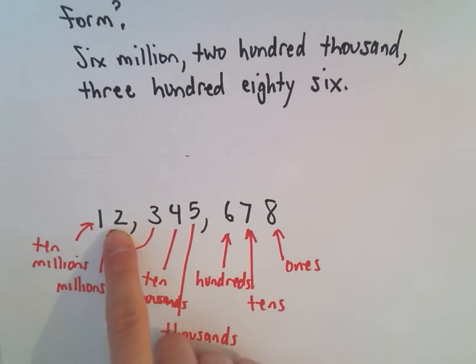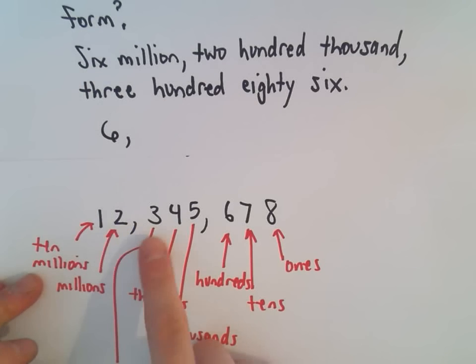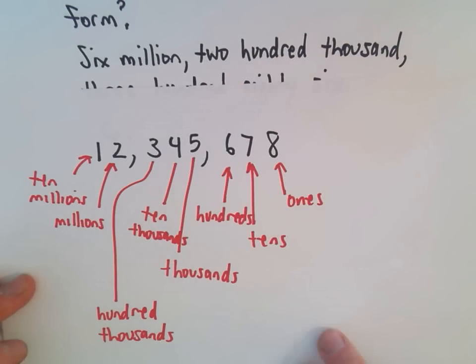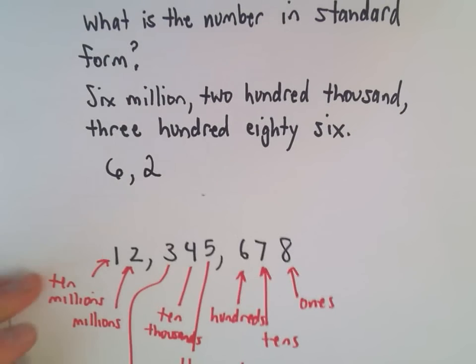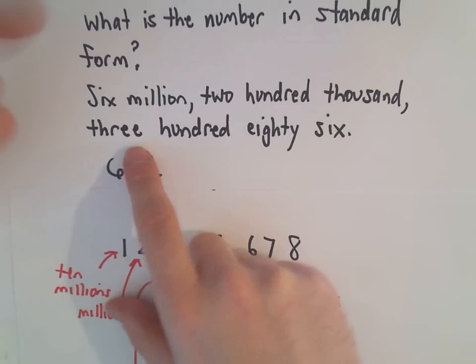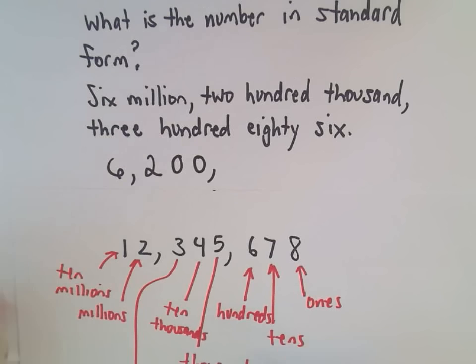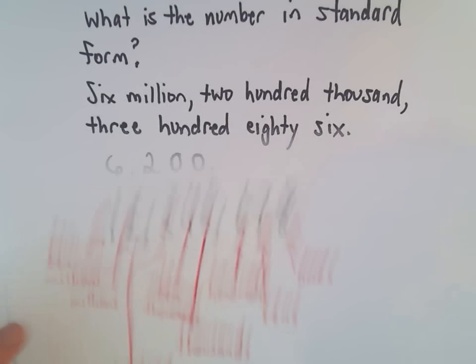It says we have 200,000. Well, there's the hundred thousands place. The hundred thousands place is the very next one. It says we have 200,000. So I'm going to put a 2 in the hundred thousands place. It says we have 200,000. And then 386. So I'm going to put a couple zeros. So there's our 200,000.